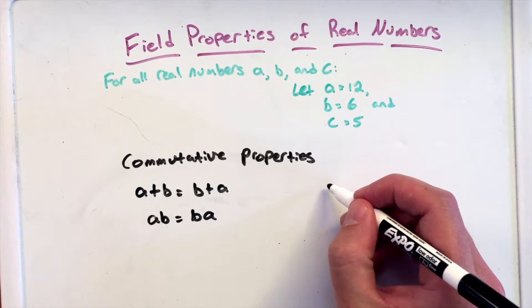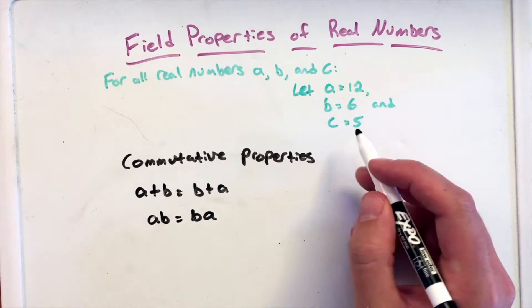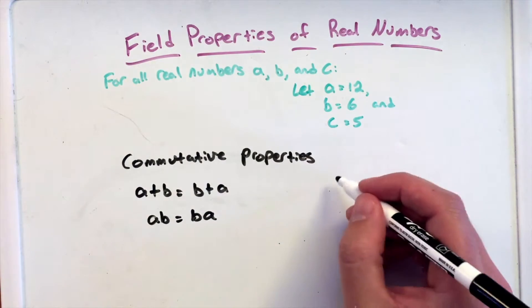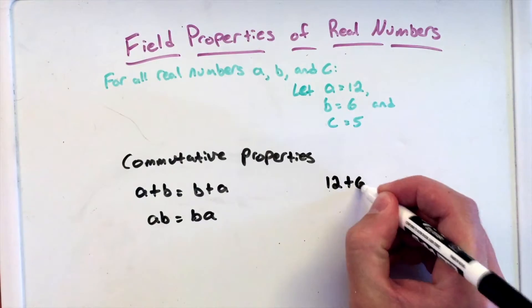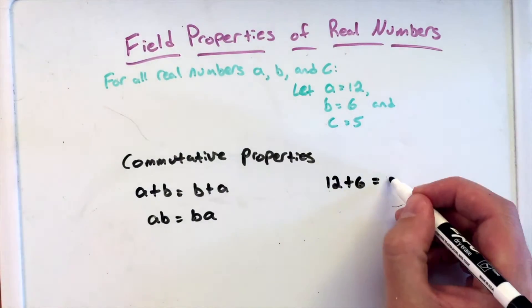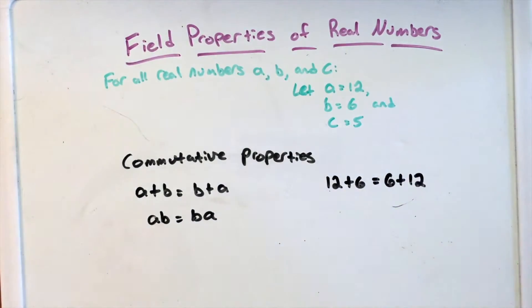So what it's really saying here in real numbers, or the examples we have up here for A and B and C, or just A and B here, 12 plus 6 is the same thing as 6 plus 12, which both are 18.